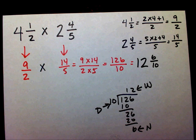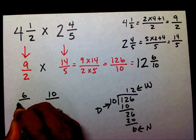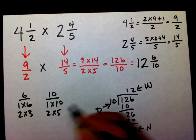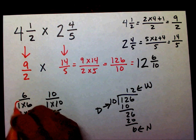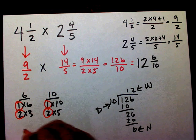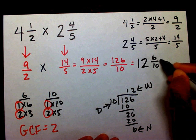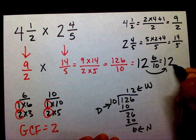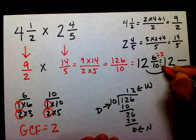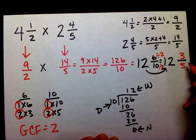I'm going to list my factors for ten and for six. Six is one times six and two times three. Ten is one times ten and two times five. My common factors are one and two, so my greatest common factor is two. I'll divide the top by two and the bottom by two — six divided by two is three, ten divided by two is five. So the final answer is twelve and three-fifths.